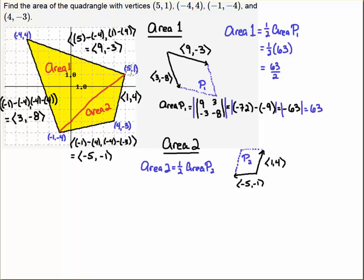Likewise, I think of (5,1) as the head and (4,-3) as the tail, so head minus tail gives us (1,4)—5 minus 4 is 1, and 1 minus minus 3 is 1 plus 3, which gives us 4. Now that I have these two vectors, I can draw the parallelogram that's spanned by those two vectors. I'll call that P2, and then we realize that we just want the area of this triangle, so the area of region 2 is half the area of P2.